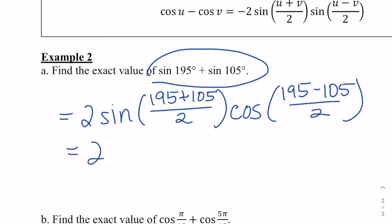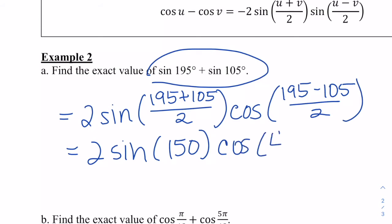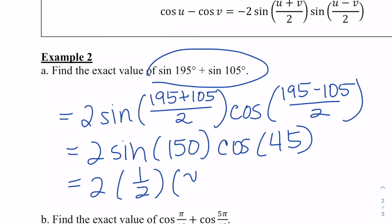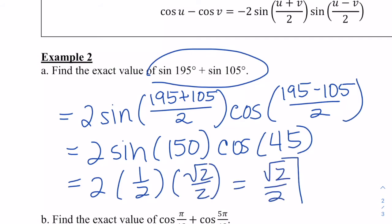Simplifying, we get 2 times sine of 150° times cosine of 45°. Using the unit circle, sine of 150° is one half — positive because it's in the second quadrant — and cosine of 45° is √2/2. So that gives us √2/2 as the exact value.